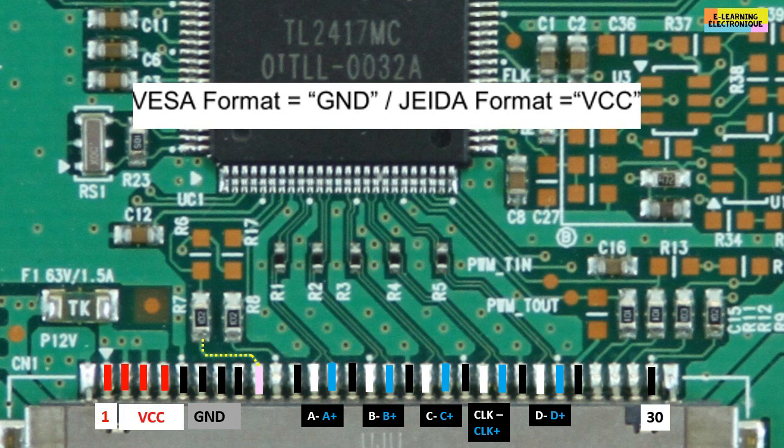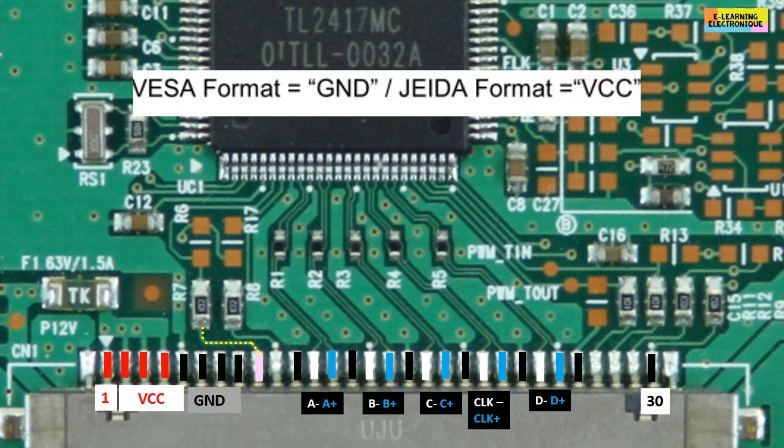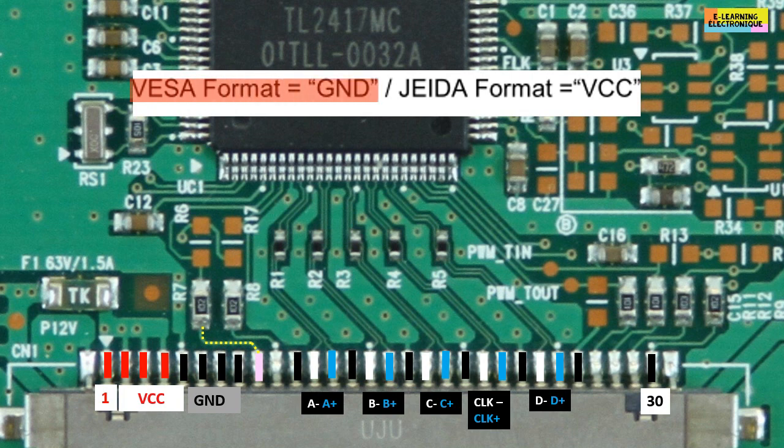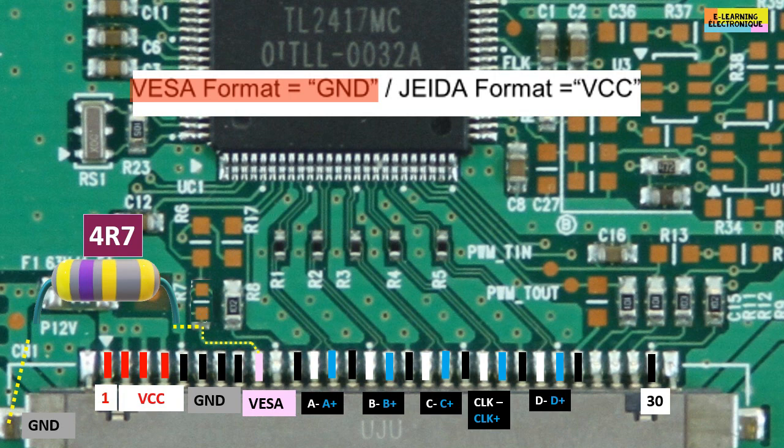We can see that pin number 9 is connected to a resistor and is not connected to the ground so it receives a VCC voltage. The TCON board is in JEIDA configuration. This VCC is usually 3.3 volts and it is different from the VCC supplying the TCON board which is 12 volts. To switch to VESA format, pin 9 must be disconnected from the 3.3 volt VCC and then connected to ground. The resistor connected to pin 9 is first removed and then connected to ground through a low value resistor, usually 4.7 ohm.